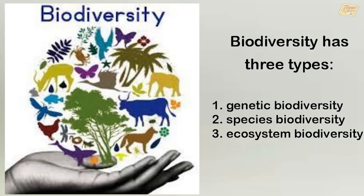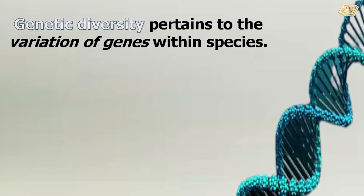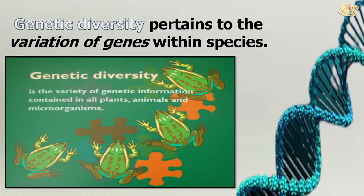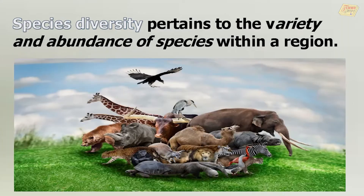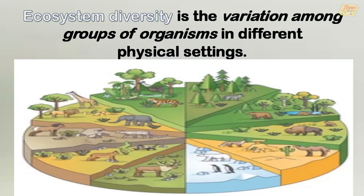Now let us discuss each type of biodiversity. Genetic diversity pertains to the variation of genes within species, or it is the variety of genetic information contained in all plants, animals, and microorganisms. Species diversity pertains to the variety and abundance of species within a region. Ecosystem diversity is the variation among groups of organisms in different physical settings.